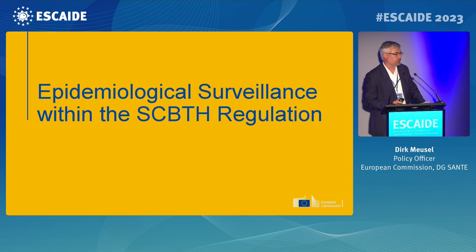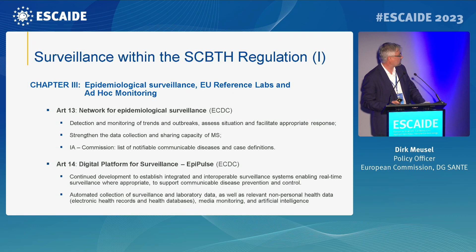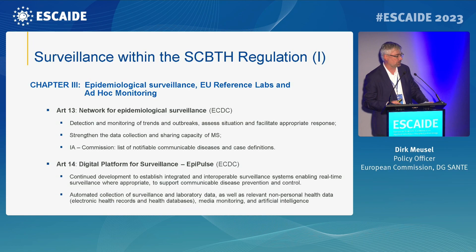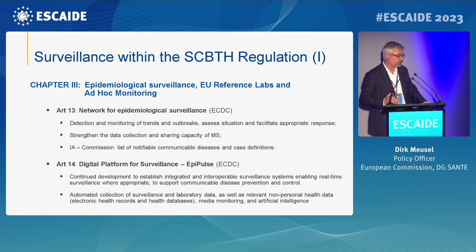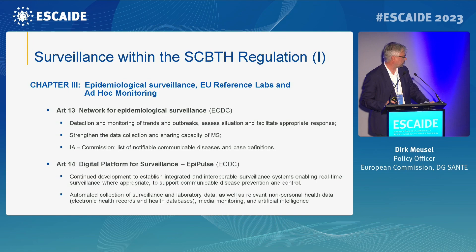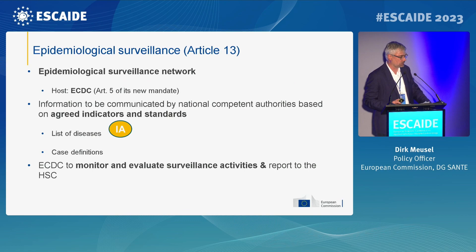Within the regulation on epidemiological surveillance, Article 13 outlines the network of epidemiological surveillance and defines that in coming years the Commission, together with member states, must define the list of notifiable communicable diseases under surveillance and their case definitions. We also have a defined digital platform for surveillance where all member states must report on this list of notifiable diseases, requiring an implementing act for the functioning of the platform and what data will be shared. The ECDC will cover this further in their presentation.